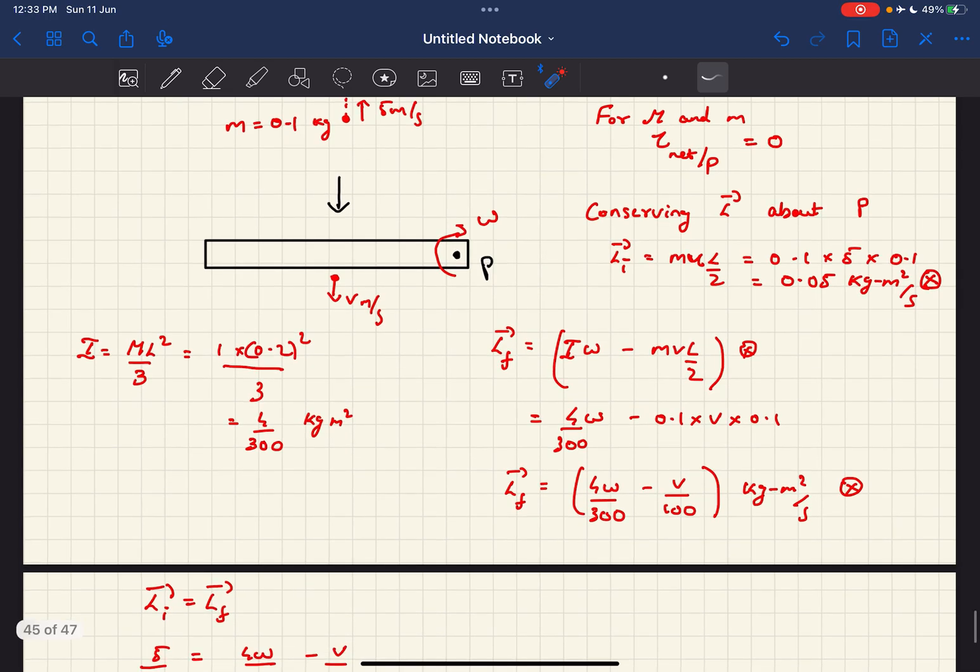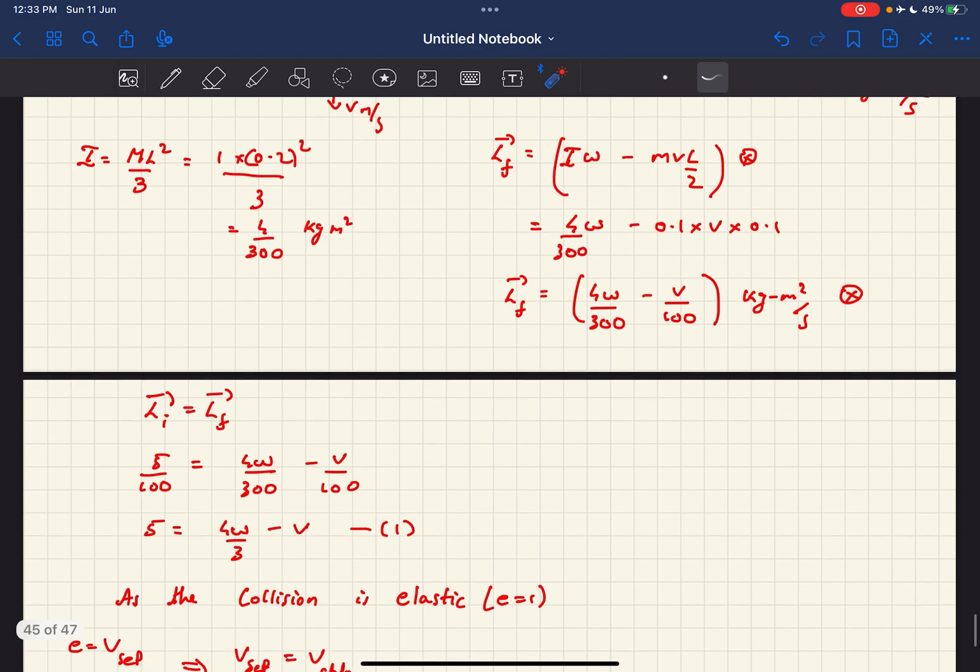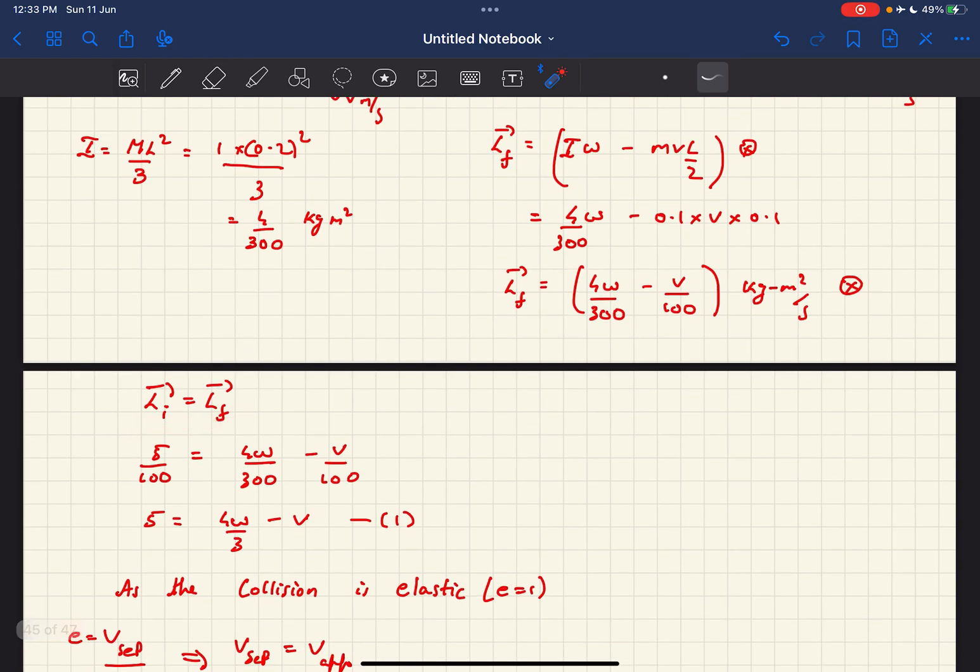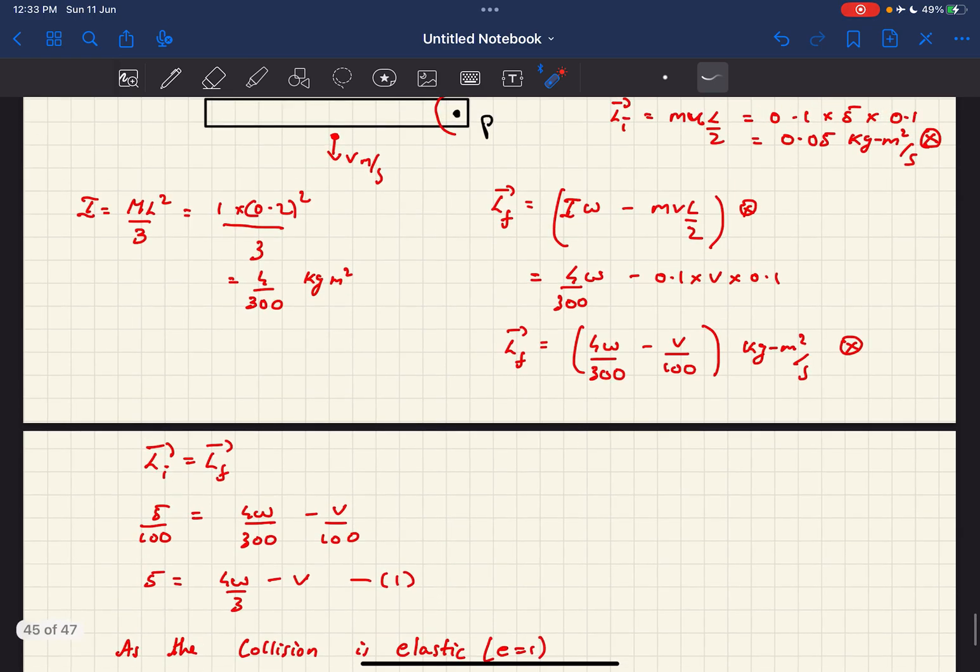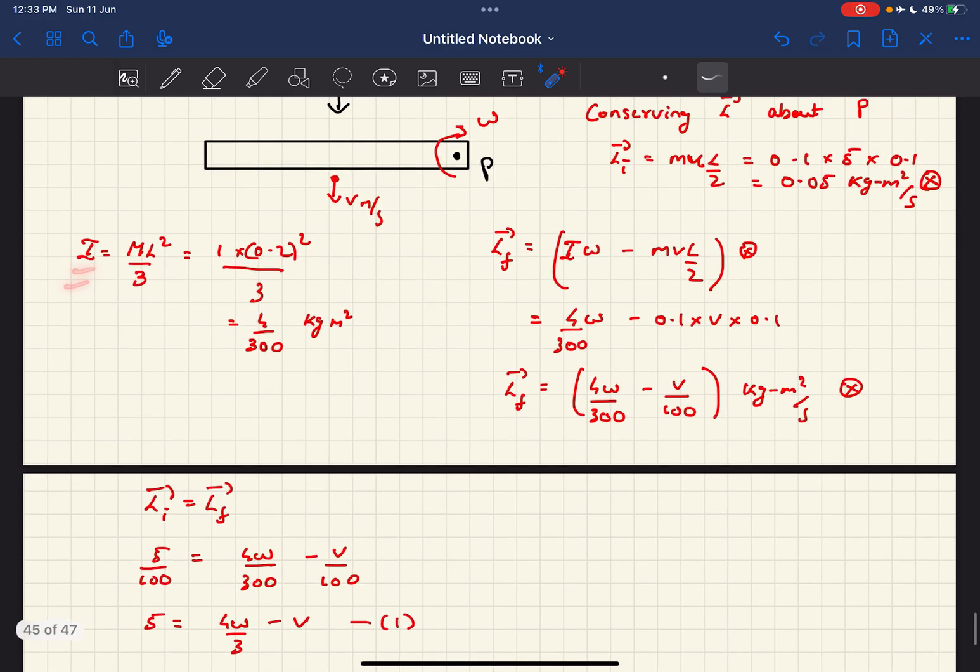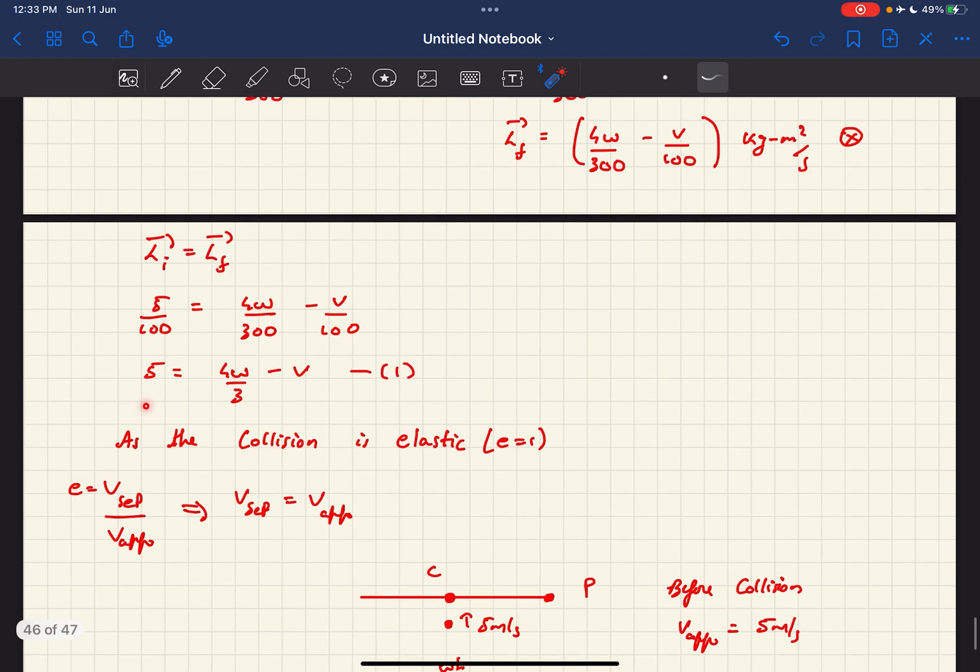So now as we know the angular momentum could be conserved, by using that fact we get our equation number one. And the moment of inertia of the rod about point P is ml squared by 3. So utilizing that, we get our first equation between omega and v.